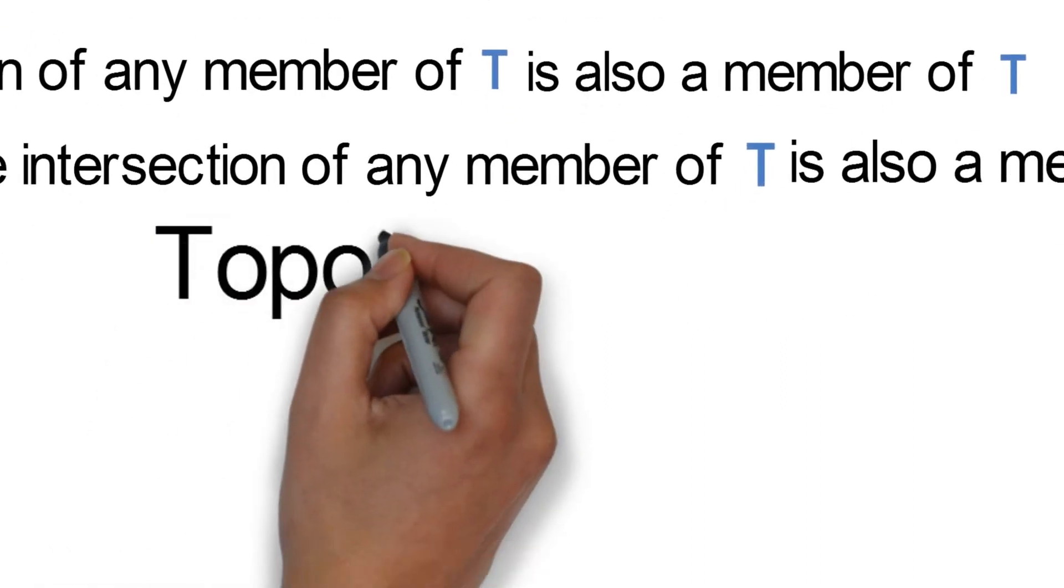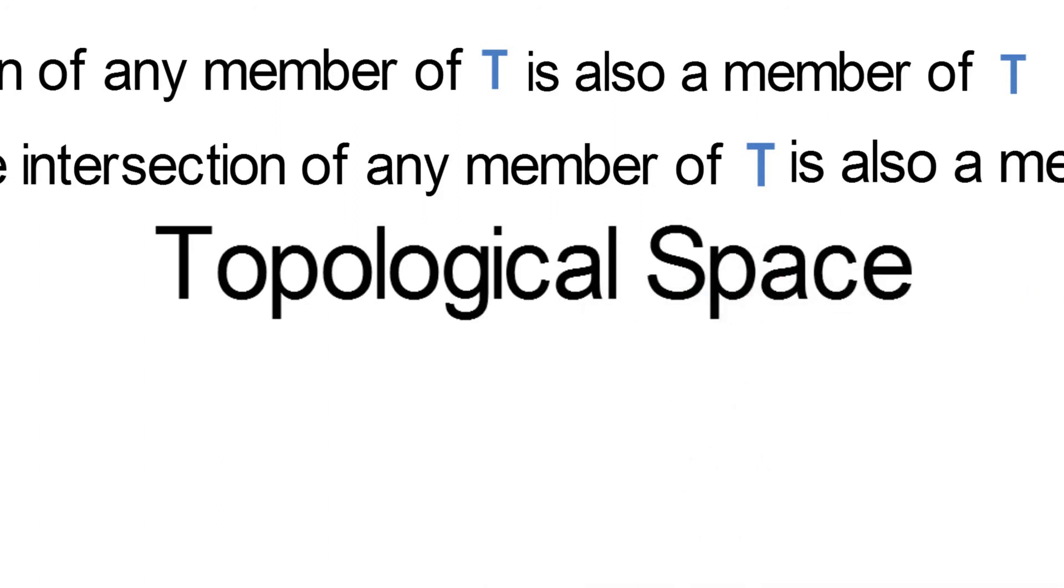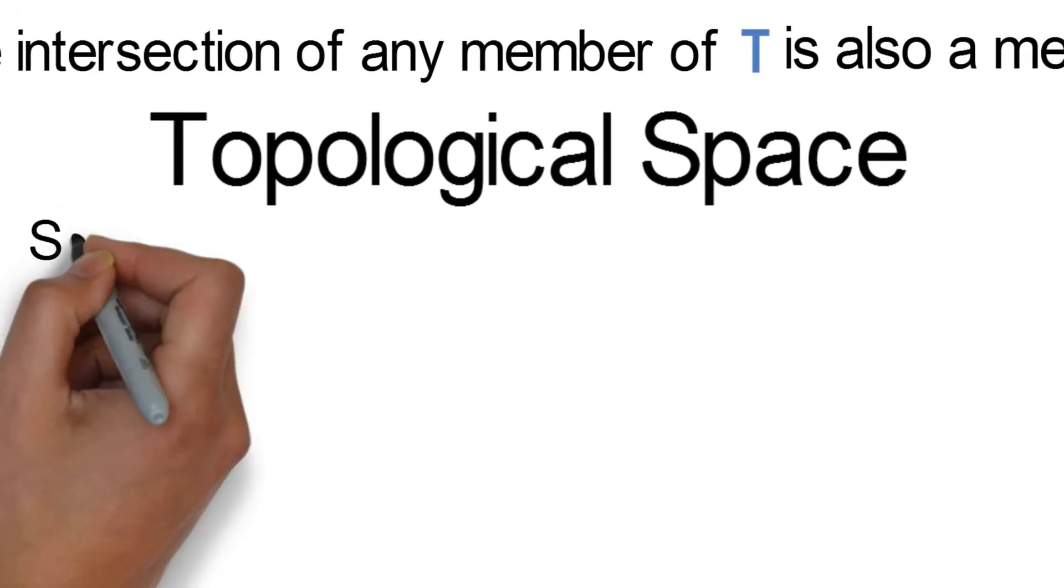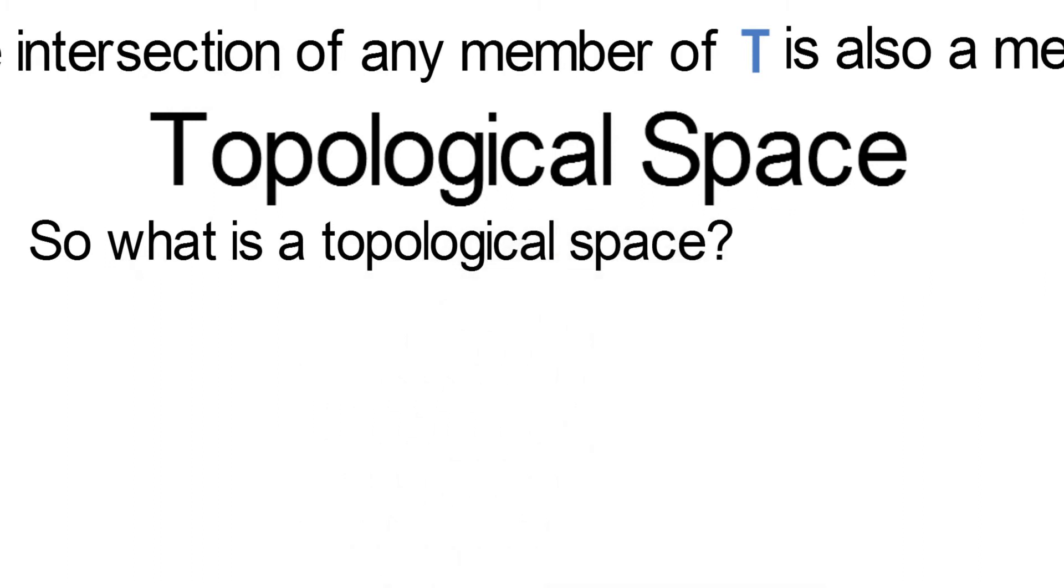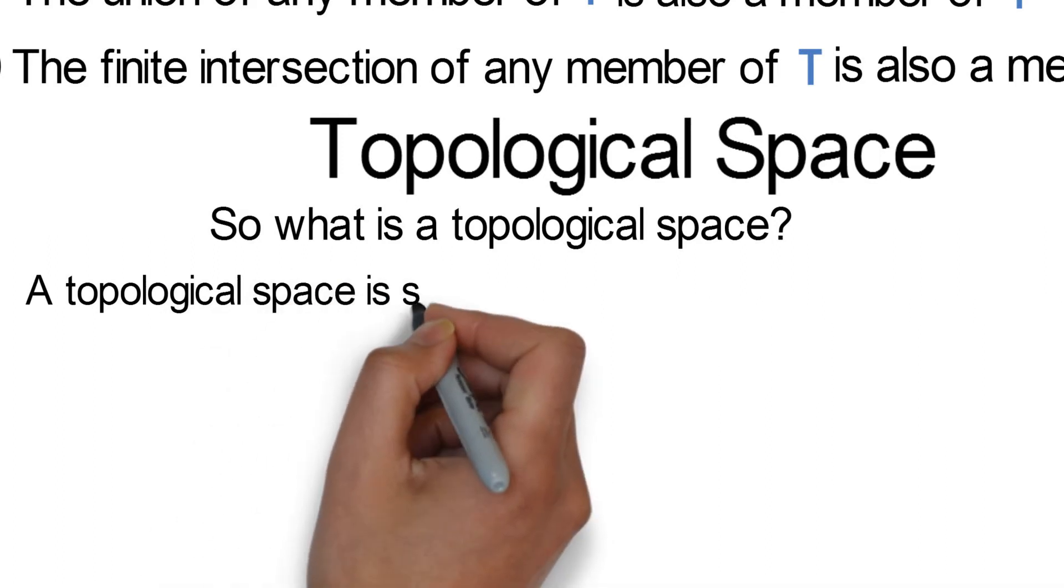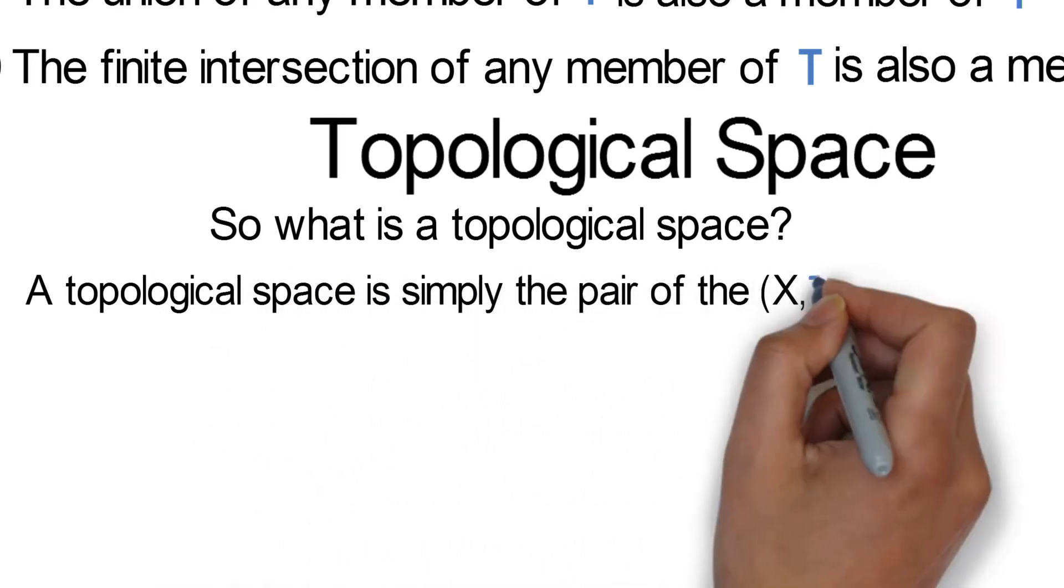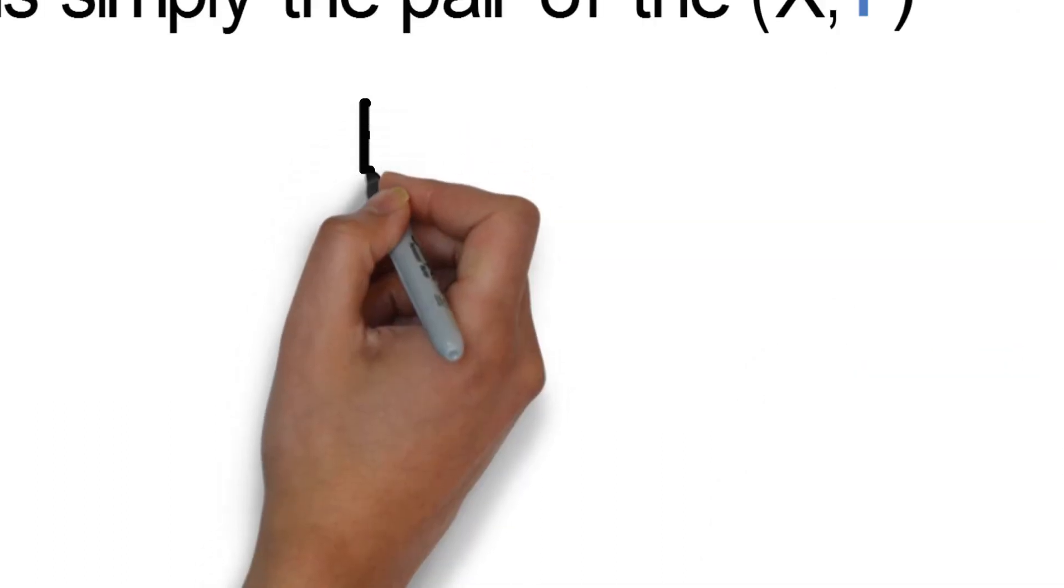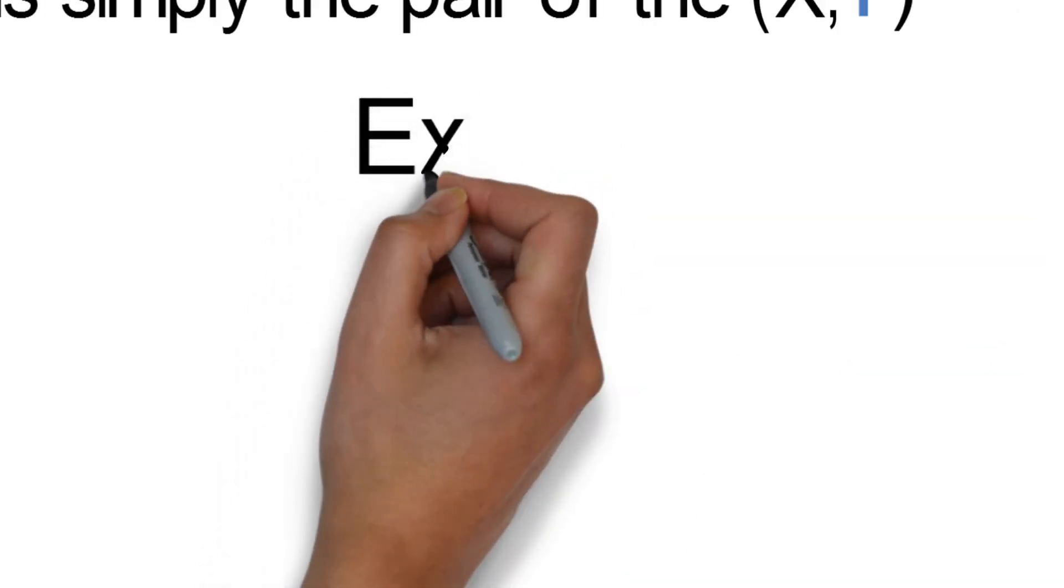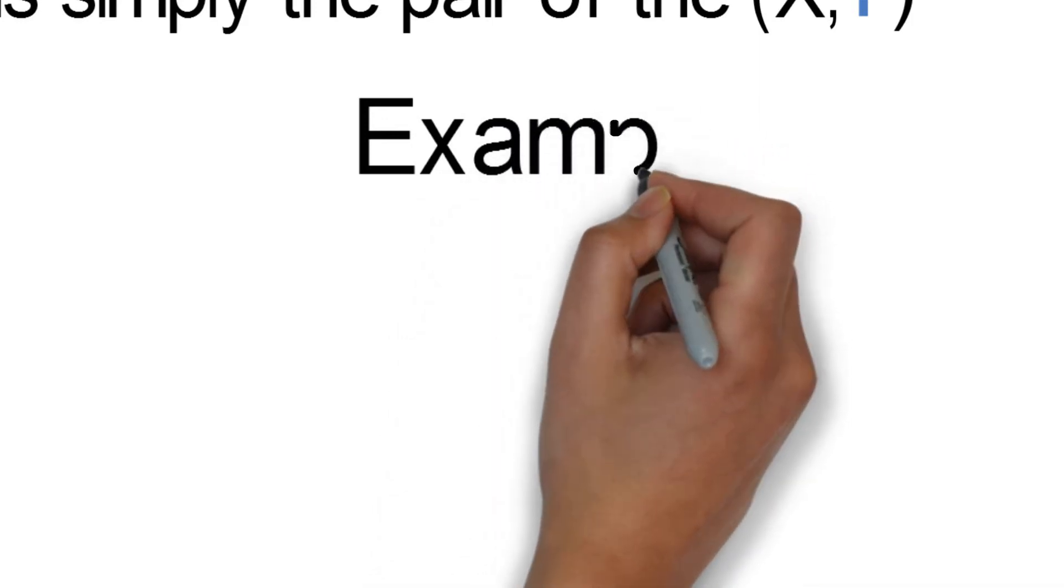So we can now define a topological space since we have known the definition of a topology. What is a topological space? A topological space is simply the pair of the entire set X and tau. So let's take some examples to understand the definitions above better.